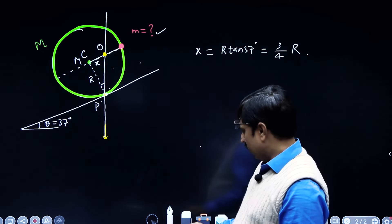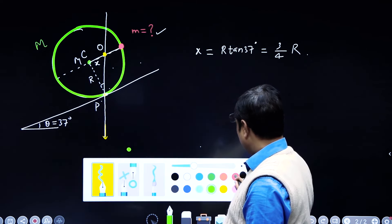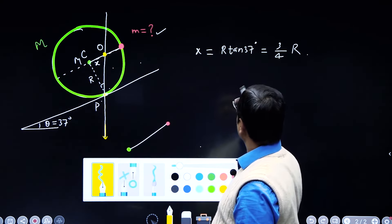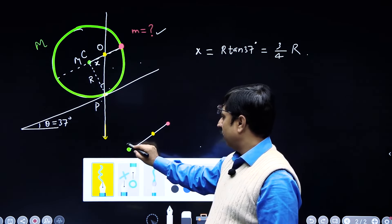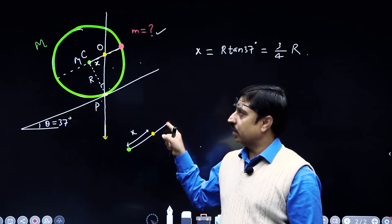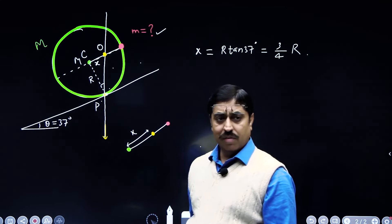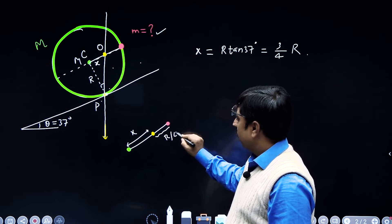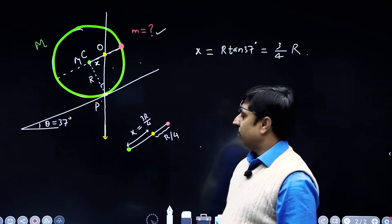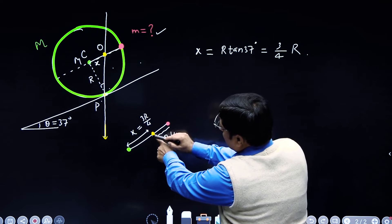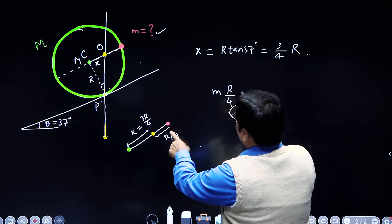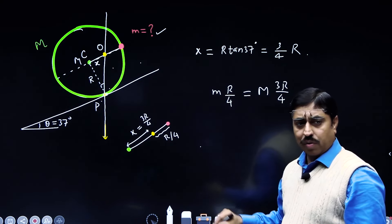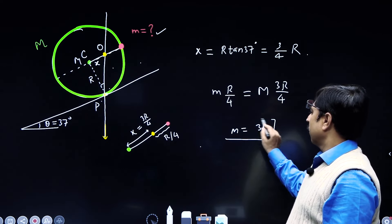So the question reduces to: there are two particles of mass capital M and small m, the center of mass lies at a distance of (3/4)r from the green particle, and the total separation is r. So this segment is r, this is (3/4)r, which means the remaining segment is r/4. Using the center of mass condition: m × (r/4) = M × (3r/4). Therefore, m equals 3M. That is the answer.